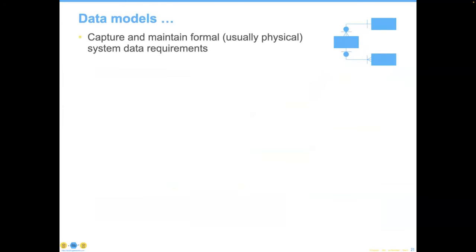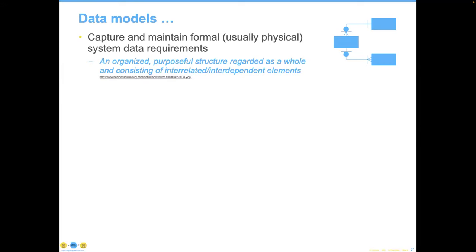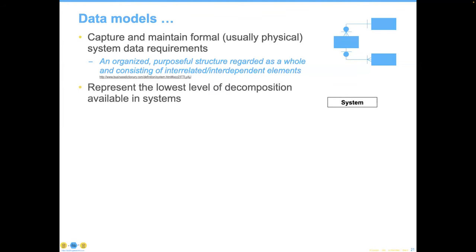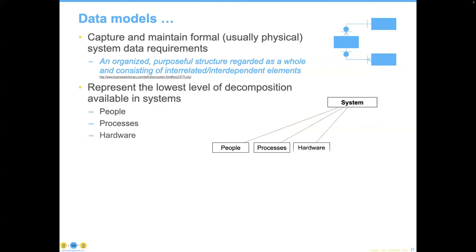Let's take a look at data models. The key is to understand this is the best way — the most objective, most testable way — of capturing and maintaining formal system data requirements. These models are critical. They give you the structure regarded as complete, containing the things and the definition of what those things keep track of — data at rest and how they are interrelated. It represents architecture at its most basic concept, and it represents an important aspect of systems, because all systems are comprised of people, processes, hardware, software, and data.